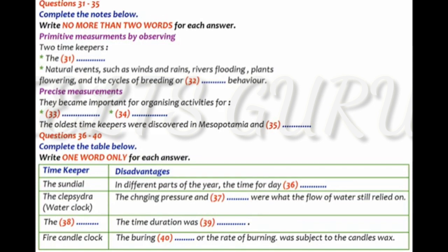A sundial is a device that tells the time of day by the apparent positioning of the sun in the sky. In the narrowest sense of the word, it consists of a flat plate and a gnomon, which casts a shadow onto the dial. As the sun appears to move across the sky, the shadow aligns with different hour lines, which are marked on the dial to indicate the time of day. However, it was quickly noted that the length of the day varied at different times of the year. Therefore, there could have been a difference between clock time and sundial time.